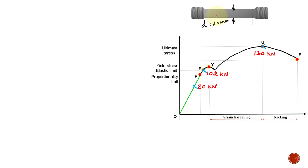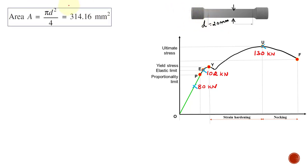The diameter of the specimen is 20 mm. We calculate the cross-sectional area as (π/4) × d² = (π/4) × 20², which gives 314.16 mm². This cross-sectional area is needed for calculating the stress values.